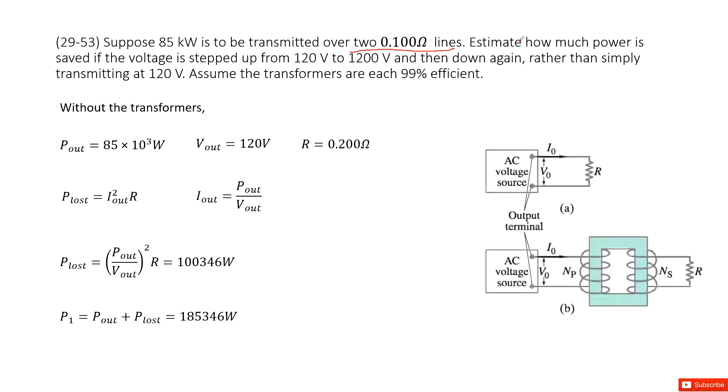Now first one, we need to estimate how much power is wasted. Power wasted in this case is just the power consumed by the cable, by this resistance R. So this is I_out squared times R, and the current out you can use the power out divided by V_out.